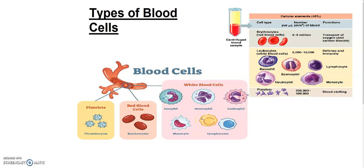WBC are present to fight harmful germs and kill all of them. They have different specific functions. At the class 10th level you don't have to learn more detail — just learn the shape and how many lobes there are. WBC protect the body against diseases or infections, and they produce antibodies — which are basically proteins — to give immunity to the body.